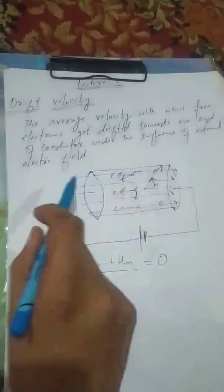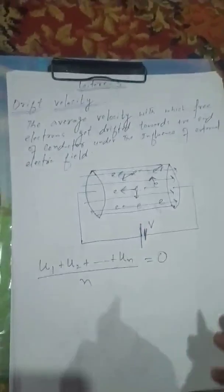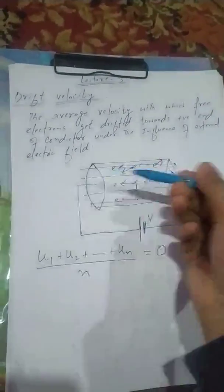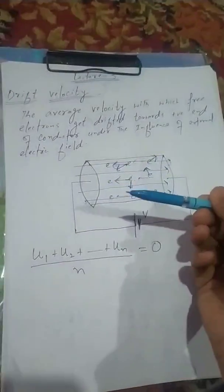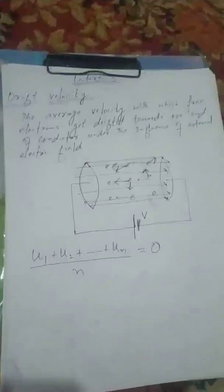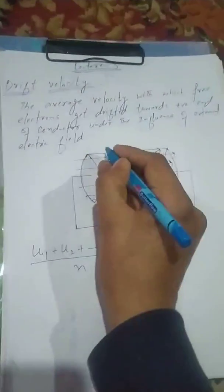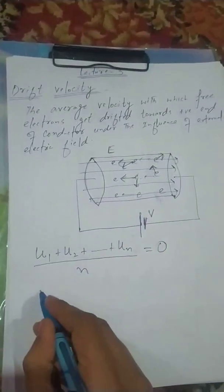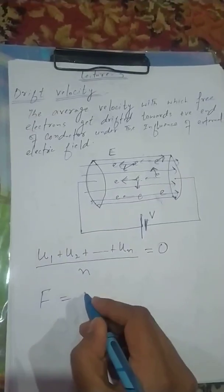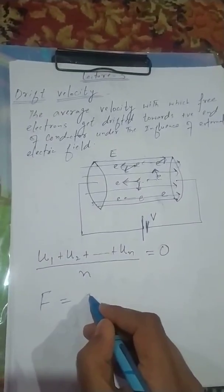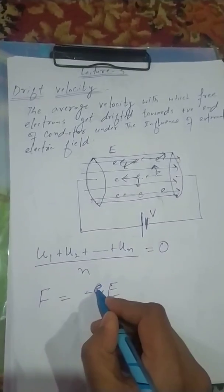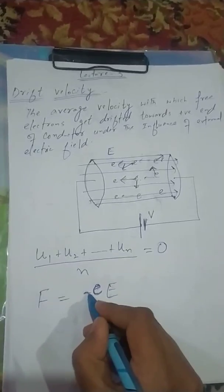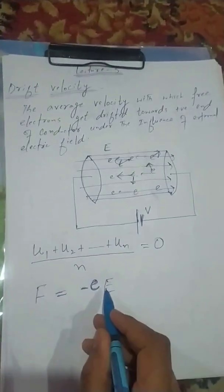Now let us look at the electric field and how it affects the electrons. Every electron in the electric field E will experience a force. The force experienced by the electron will be equal to minus e into E, where E is the applied electric field and minus e is the charge of the electron. When we put a charge in a field it experiences a force equal to charge into electric field. The negative sign indicates the electron charge.